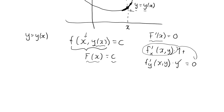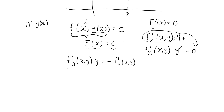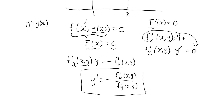Moving terms to the other side, we have the partial derivative of f with respect to y times y prime equal to minus the partial derivative of f with respect to x. As long as the partial derivative with respect to y is not zero, we can divide both sides, and we get the result we were looking for: the slope of the level curve is minus the ratio of the partial derivatives.